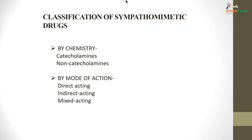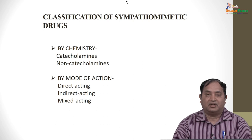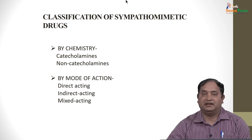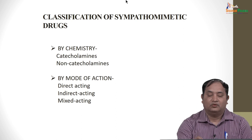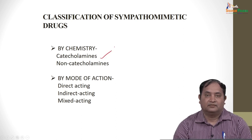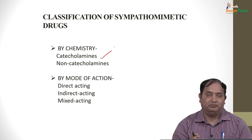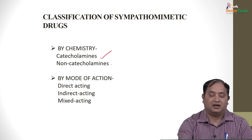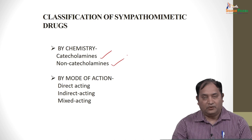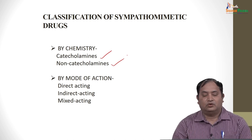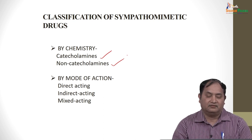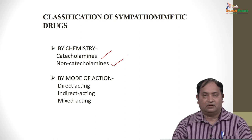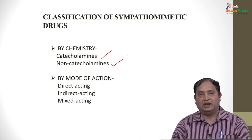Let us classify sympathomimetic drugs. If you look at the chemical part, as I just said, they are typically called catecholamines. There are some drugs belonging to catecholamines and the rest are non-catecholamines. You can also divide them by mode of action. Some catecholamine sympathomimetics act directly, some are indirectly acting, and some are mixed — having dual action.